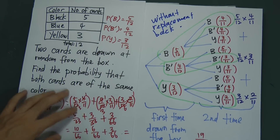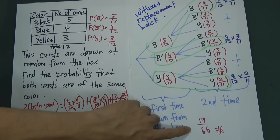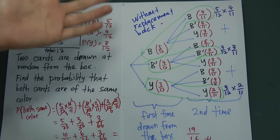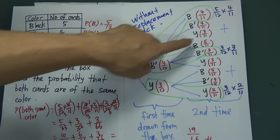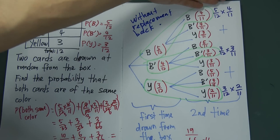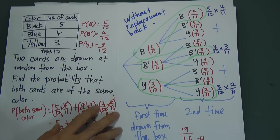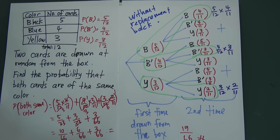You write out all possibilities and look at what the question wants. If the question asks for both cards to be different colors, it's very simple — you use one minus the probability we just found. Or you can multiply and sum up all the combinations: black×blue, black×yellow, blue×black, blue×yellow, and so on — you'll get the same answer. I hope this video helps you understand probability better. I'll post more videos on this topic as it can be quite hard for some students.